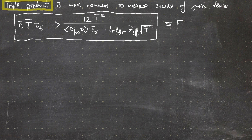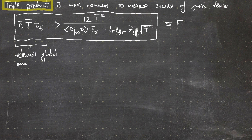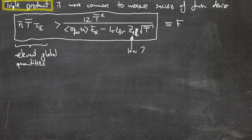The advantage of the triple product is that on the left-hand side we have all the relevant global quantities that are hard to achieve to get fusion, and on the right-hand side we have more or less the same fraction as in the original Lawson criterion except for an additional factor of T. As a reminder, Z_eff — the effective charge number — is important to keep at a low level, meaning we want to avoid impurities which would increase Z_eff and thus increase losses due to bremsstrahlung.